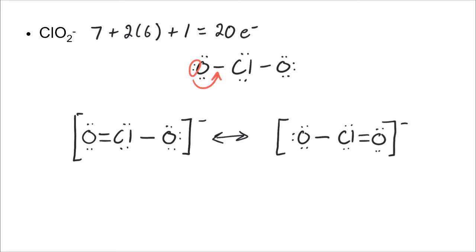In reality, the structure is not the one on the left or the one on the right — it's a hybrid of both of these. Since this pair of electrons spends its time equally between the left and the right, it actually is a one-and-a-half bond. And so the bond order in this ion is one and a half on each side. There's another video that explains that a little bit more.